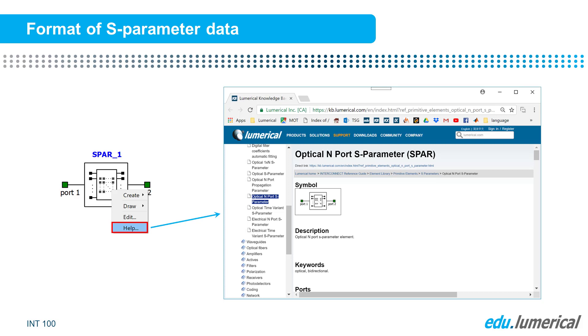As you may recall, you can access the documentation page for an element by right-clicking on it and selecting Help from the context menu.